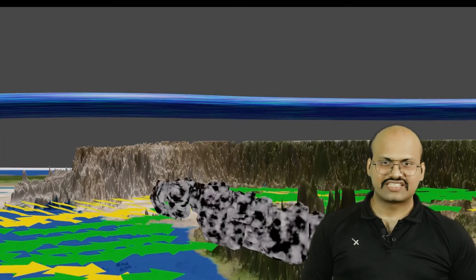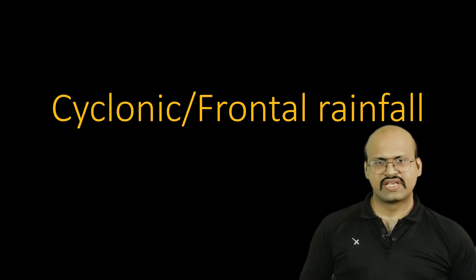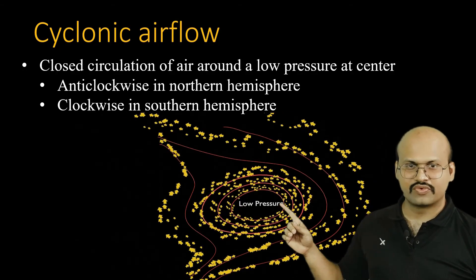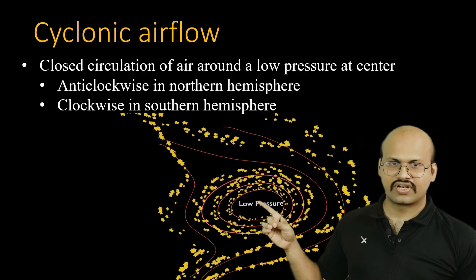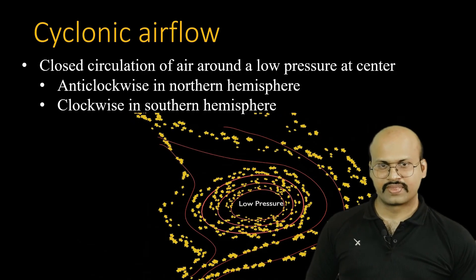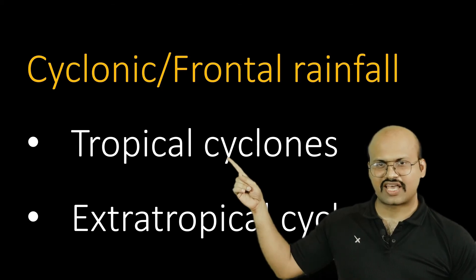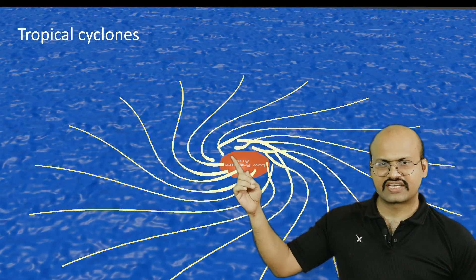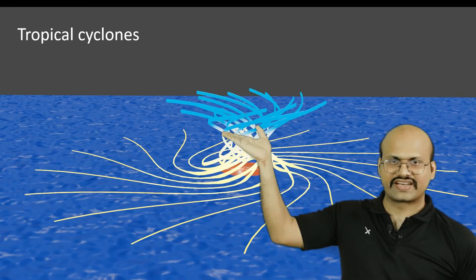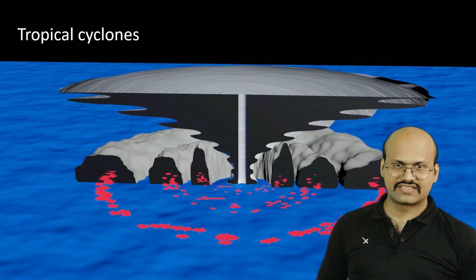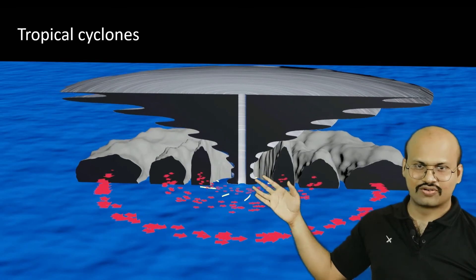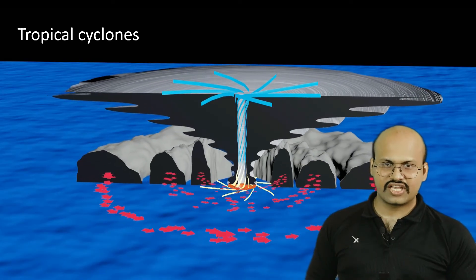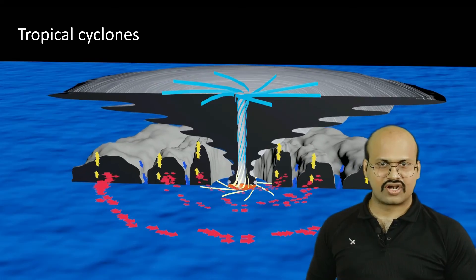The next type of rainfall is cyclonic or frontal rainfall. Cyclonic rainfall is caused by cyclonic airflow — any airflow moving in a circular direction around a low pressure area. This cyclonic airflow can be related to tropical cyclones or extratropical cyclones. In a tropical cyclone, air converges around the low pressure region and rises up, giving rain. There are many bands in a tropical cyclone where air rises and gives rain to their respective regions. The rainfall occurring in a tropical cyclone is called cyclonic rainfall.